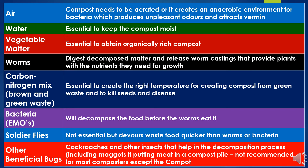Here we have shown the requirements of composting. The primary requirements are: air, water, vegetable matter, worms, a carbon-nitrogen mix, and microorganisms. Organisms like soldier flies and earthworms are needed for decomposition of organic material, along with other beneficial bugs. These are the primary requirements for the composting process.